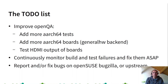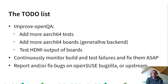We can improve OpenQA as well — we can add more AArch64 tests to close the gap with x86 and have the same tests. We can also add more AArch64 ports. Currently we only test Raspberry Pi 2, 3, and 4. We could add more boards if people are interested.